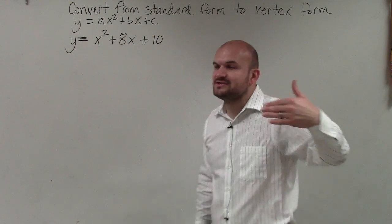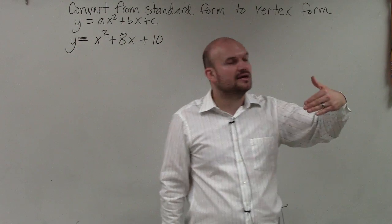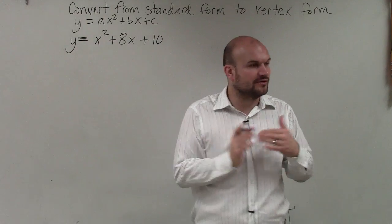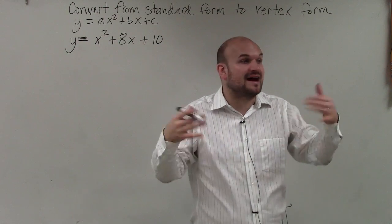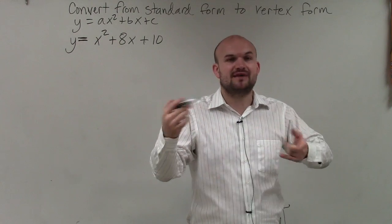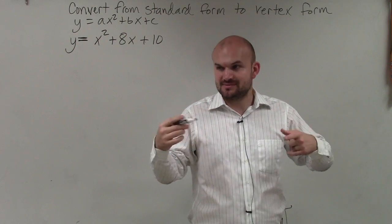When we're graphing in standard form, the process was finding the axis of symmetry, which was x equals negative b divided by 2 times a.